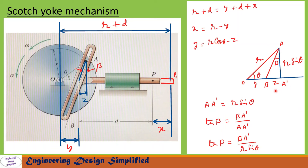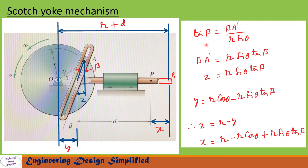From tan β = z / (r·sinθ), we get z = r·sinθ·tanβ. Substituting z into y: y = r·cosθ − r·sinθ·tanβ. Now substituting y into x — the displacement of point P — we get: x = r − r·cosθ + r·sinθ·tanβ. This is the equation to find the displacement of point P on the slider.